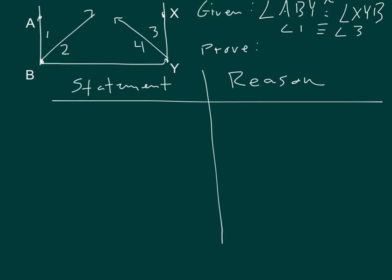What I'm trying to prove is that angle 2 is congruent to angle 4. So I want to prove that this angle and this angle are congruent.